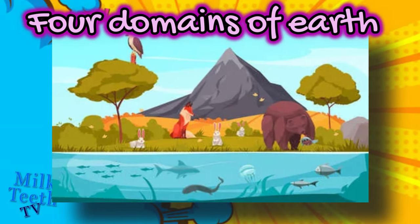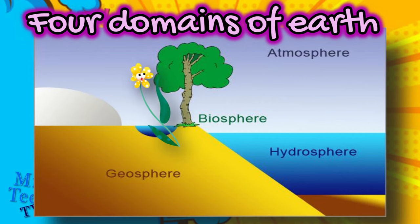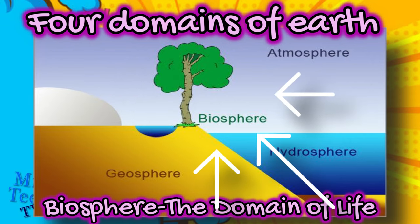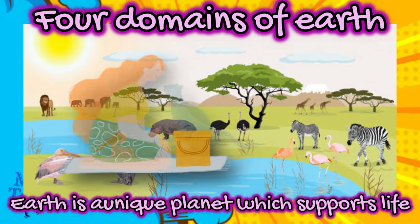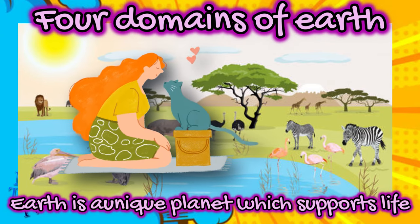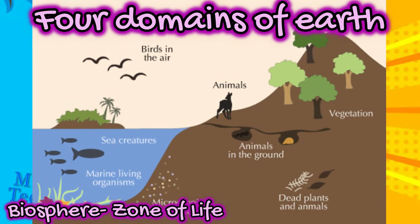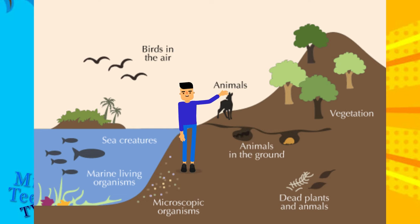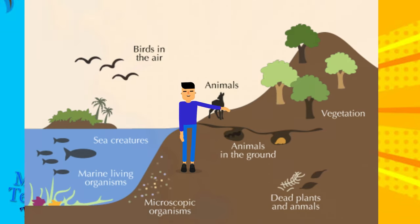The fourth and most important and unique domain is the biosphere — the domain of life on Earth. The biosphere is the zone where the lithosphere, the hydrosphere, and the atmosphere interact. Our Earth is a unique planet that can support life due to the presence of these three domains. All forms of life exist in this zone, including animals, humans, birds, vegetation, creatures in the ground, dead plants and animals, sea creatures, and all marine plants and animals.